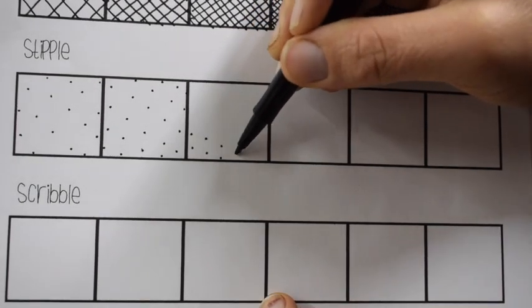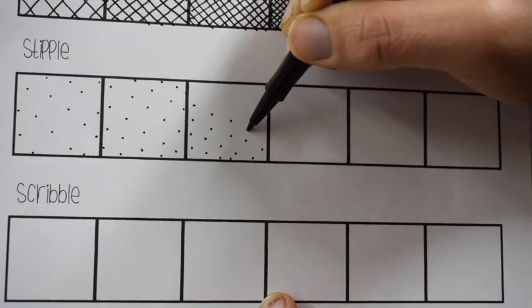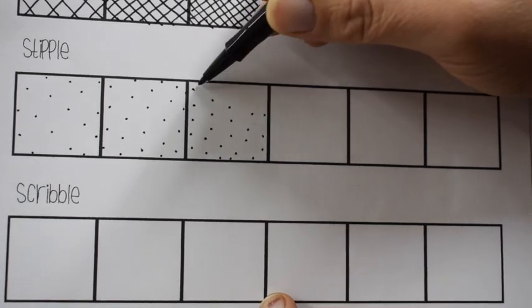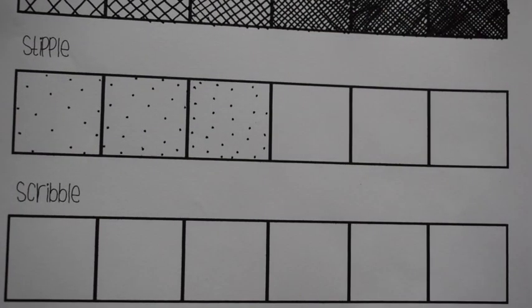So just like with the crosshatching and the hatching, it's all about how close each mark is to one another. And that creates the idea of value. It is a really cool effect.